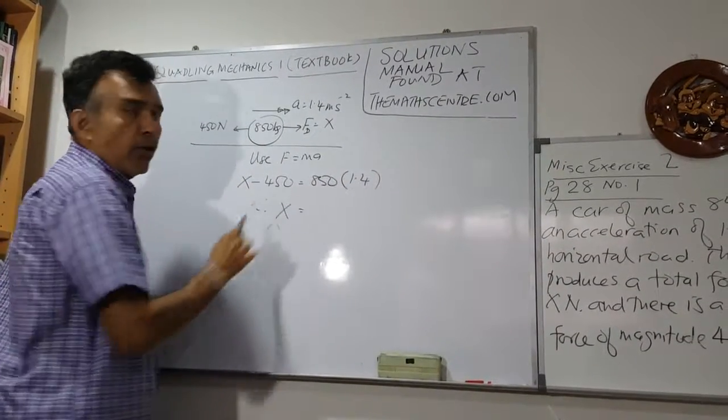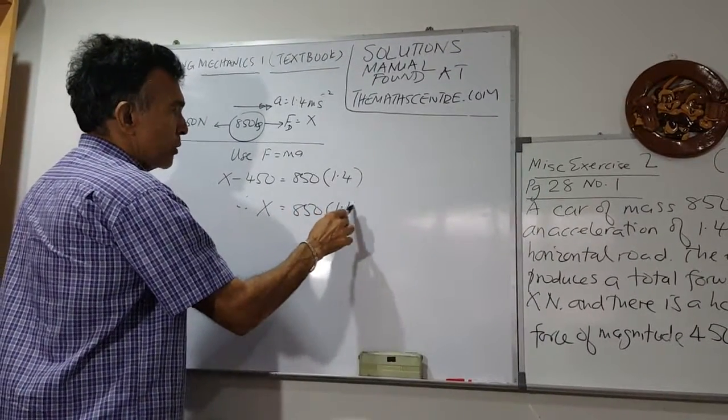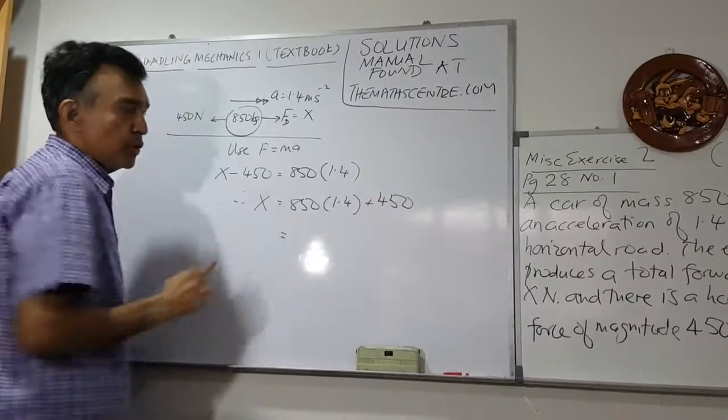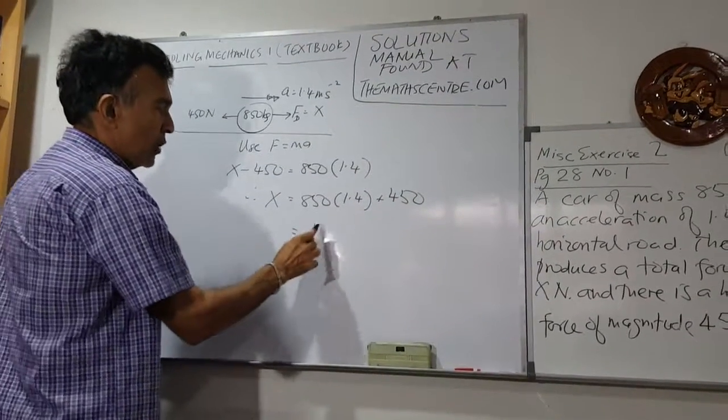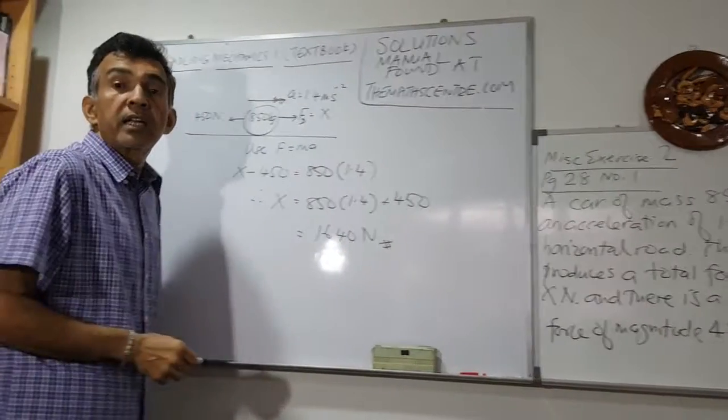Therefore, bringing the 450 to the right-hand side, we have X equals 850 times 1.4 plus 450. Using a calculator, you get 1640 Newtons. And we are done. Thank you.